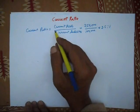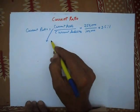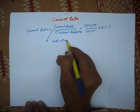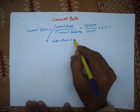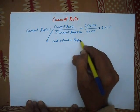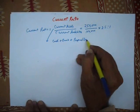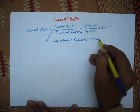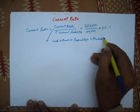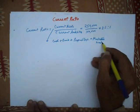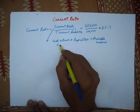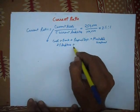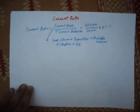In current assets we can include cash, bank, prepaid expenses, marketable investments, sundry debtors, and bill receivable inventories.